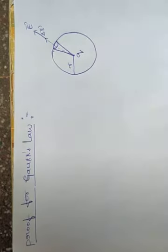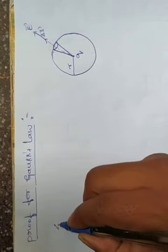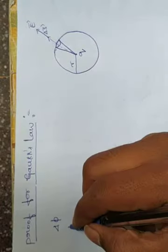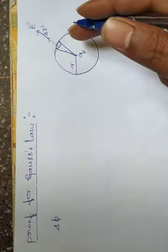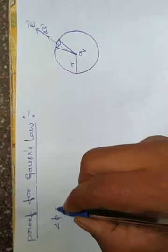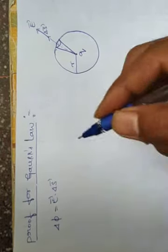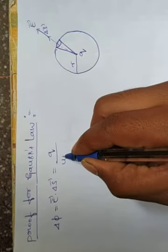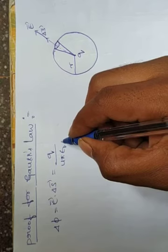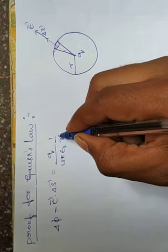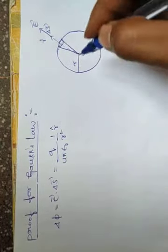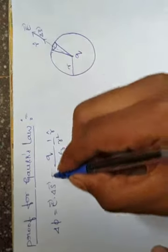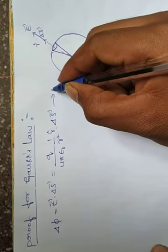The flux through an area element delta s is delta φ. Delta φ is the electric flux through a small area element delta s. The electric flux is equal to E into delta s. The electric field E is equal to Q / (4π ε₀) times (1/r²) r-cap. So delta φ = Q/(4π ε₀) × (1/r²) r-cap · delta s.